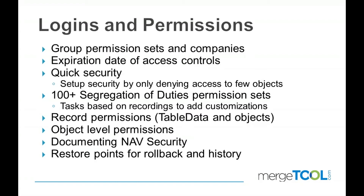We also have an ability to record permissions. The later versions of NAV have that too, but we extend it quite a lot — allowing you to record a person in a current situation with a permission error and temporarily assign them super, for example. Object-level permission is a way to prevent people from seeing things, and that is an integrated part of our solution — removing access to financial information, as you will see today. We also have a lot of tools for documenting security, both for your own maintenance purposes and for auditors if necessary.